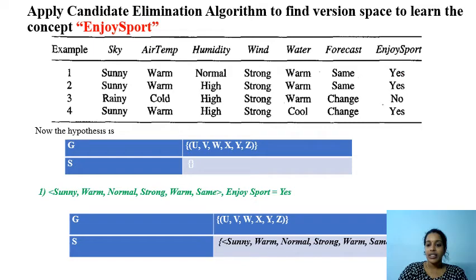The first instance is a positive instance and we have to check whether G and S accept this positive example. Let's check. Sunny and U, that is accepted. These variables in the general set can accept any values and this instance is getting accepted by G.